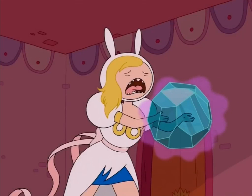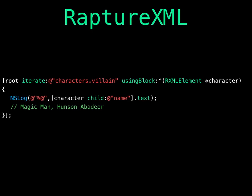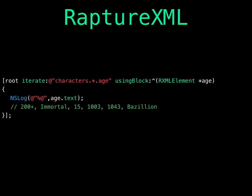It actually gets better. RaptureXML is block-mad, and I'm also block-mad, so this meshes well with how I think things should be done. RaptureXML has block-based queries through iteration. You grab your root node and say I want to iterate over everything matching 'characters', and inside characters match every 'villain', using a block to do it. That block receives each individual node — so you'd get Magic Man and Hunson Abadeer, because they're the villains. You can also use wildcards in the query strings, like 'characters/*/age', which returns all the ages of every character in the XML — 200, immortal, 15, et cetera. And if you really want, you can use iterateWithXPath and pass in an XPath string.